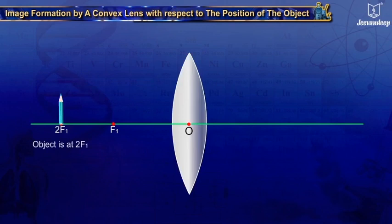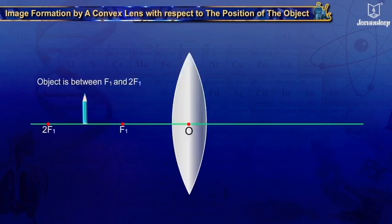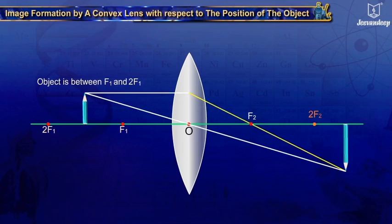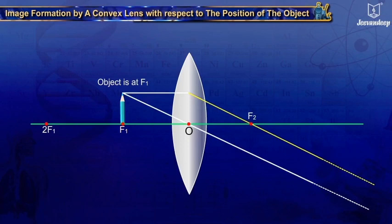When the object is at 2F1, the image is formed at 2F2 — the image is magnified, real, and inverted. When the object is at focus F1, the image is formed at infinity — the image is infinitely large, highly magnified, real, and inverted.